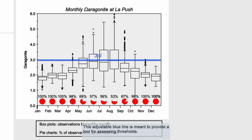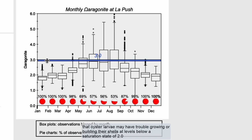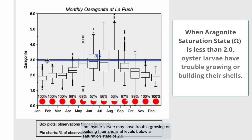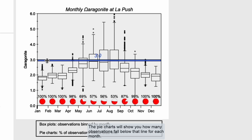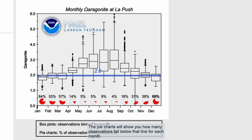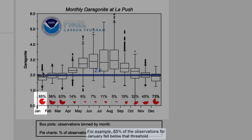This adjustable blue line is meant to provide a tool for assessing thresholds. For example, if we know from studies that oyster larvae may have trouble growing or building their shells at levels below a saturation state of 2, you can drag this threshold line down to 2. The pie charts will show you how many observations fall below that line for each month — for example, 85% of the observations for January fell below that threshold, meaning conditions in January were largely not good for shell building.